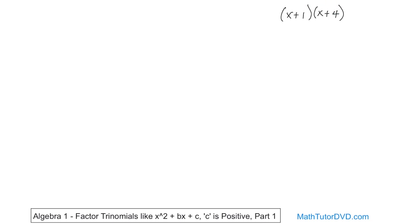So if you were actually going to do this, the first two terms: x times x gives you x squared. The outside terms, x times 4, gives you 4x. The inside terms, 1 times x gives you x. And the last terms, 1 times 4 gives you 4. Then we collect like terms — 4x plus x — so this comes out to be x squared plus 5x plus 4.